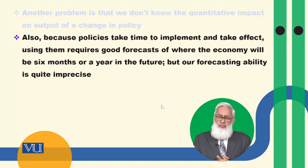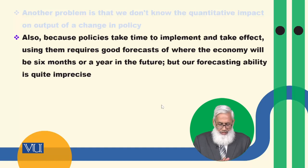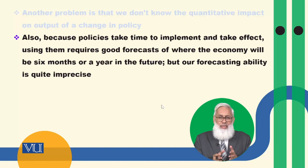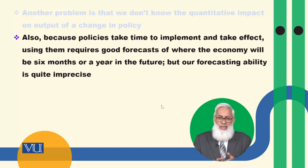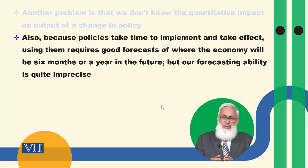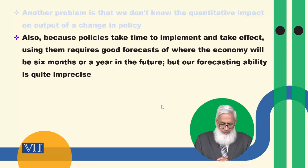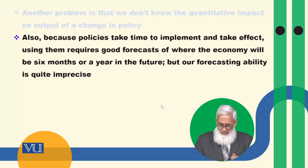Policies बनाने में, implement करने में, और उनका impact आने में time लगता है। So using them requires good forecast of where the economy will be six months to a year in the future. इस वक्त हम कहाँ हैं और साल बाद economy कहाँ खड़ी होगी, ये भी पता होना चाहिए — but our forecasting ability is quite imprecise, तो ये सारे काम इतने आसान नहीं हैं।